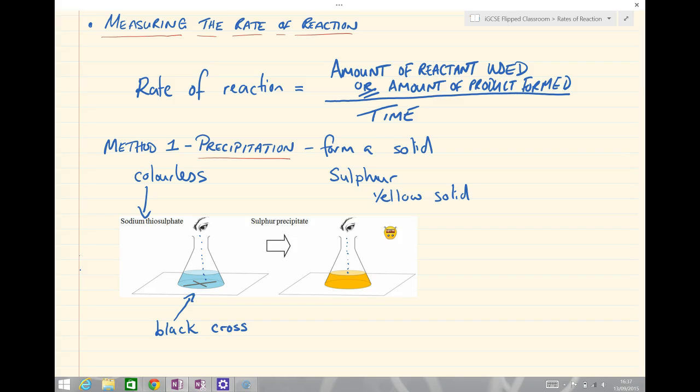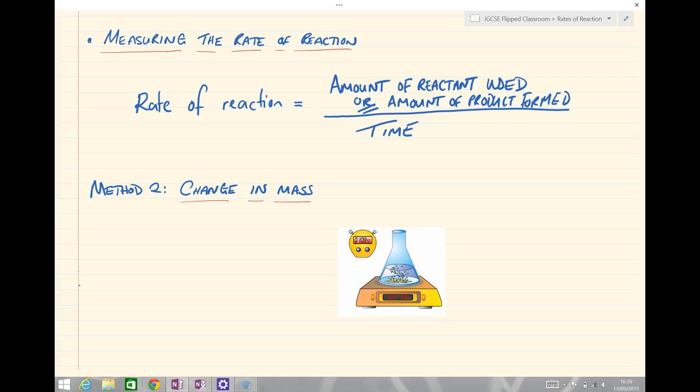Now let's look at Method 2. Method 2 is when we can measure the change in mass. Which instance do you think we're going to be measuring here? Are we measuring the amount of reactant used or the amount of product formed? That's right, we're really measuring the amount of reactant used because the product is being given off.